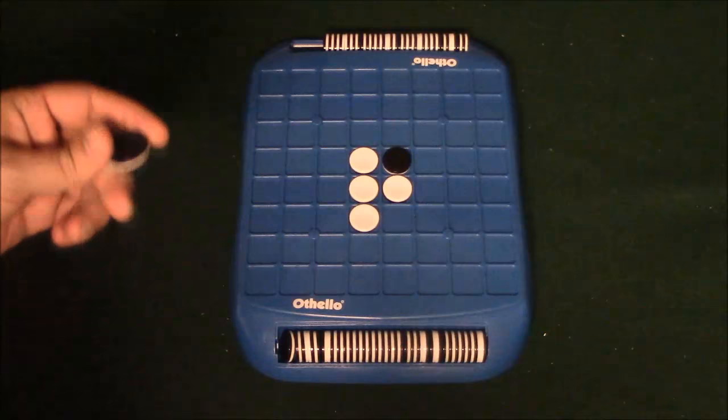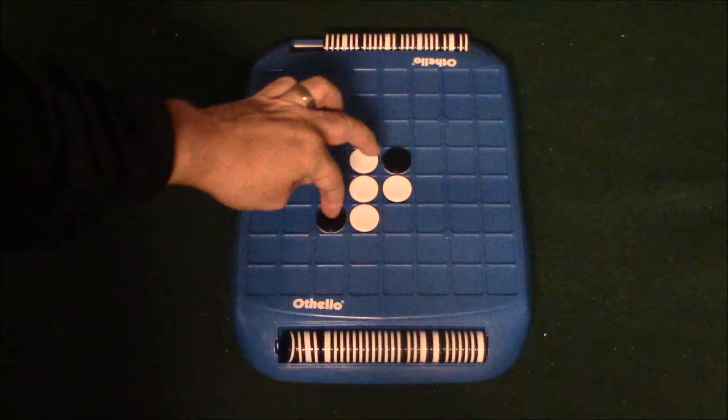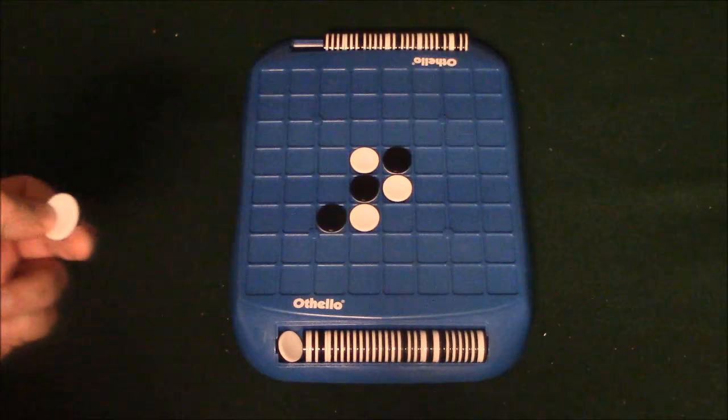Now my opponent's going to try to see if he can find a place to put his chip to turn over the white ones. Here's a good spot right here. There's a black one here, a black one here. So this one's going to get turned over like so.